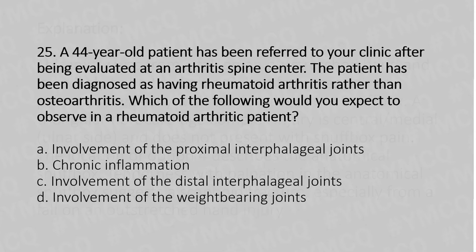Now let's move to our 25th question. A 44-year-old patient has been referred to the clinic after being evaluated at an arthritis spine center. The patient has been diagnosed with rheumatoid arthritis rather than osteoarthritis. Which of the following would be expected in a rheumatoid arthritis patient? Option A: Involvement of proximal interphalangeal joints. Option B: Chronic inflammation. Option C: Involvement of distal interphalangeal joints. Option D: Involvement of weight-bearing joints.